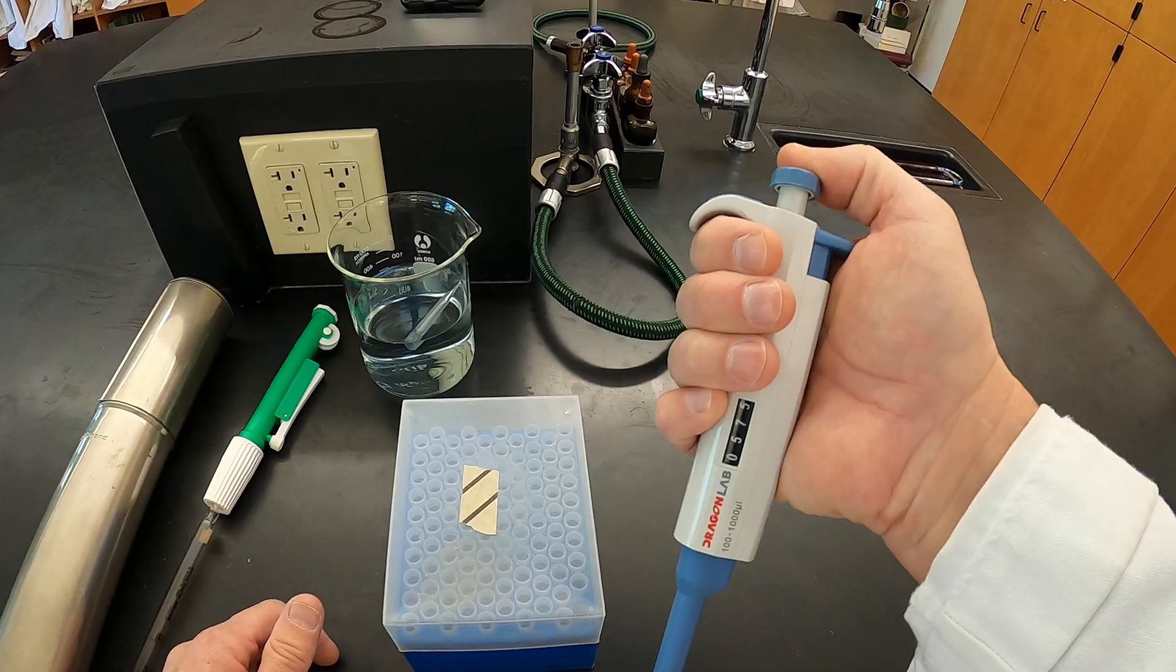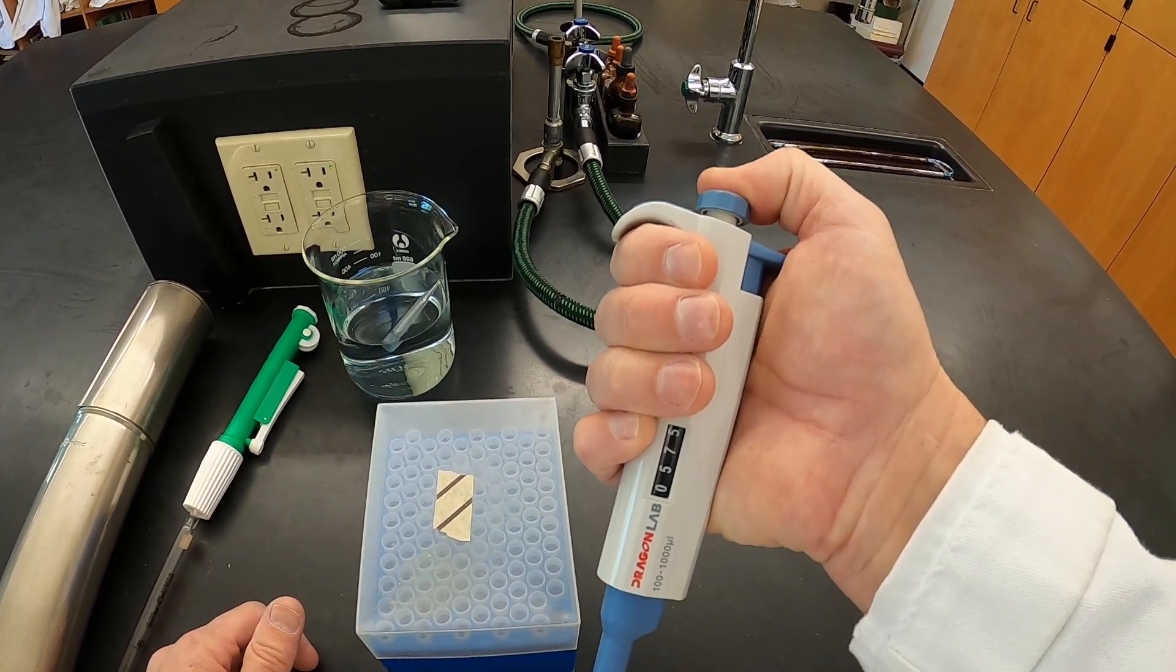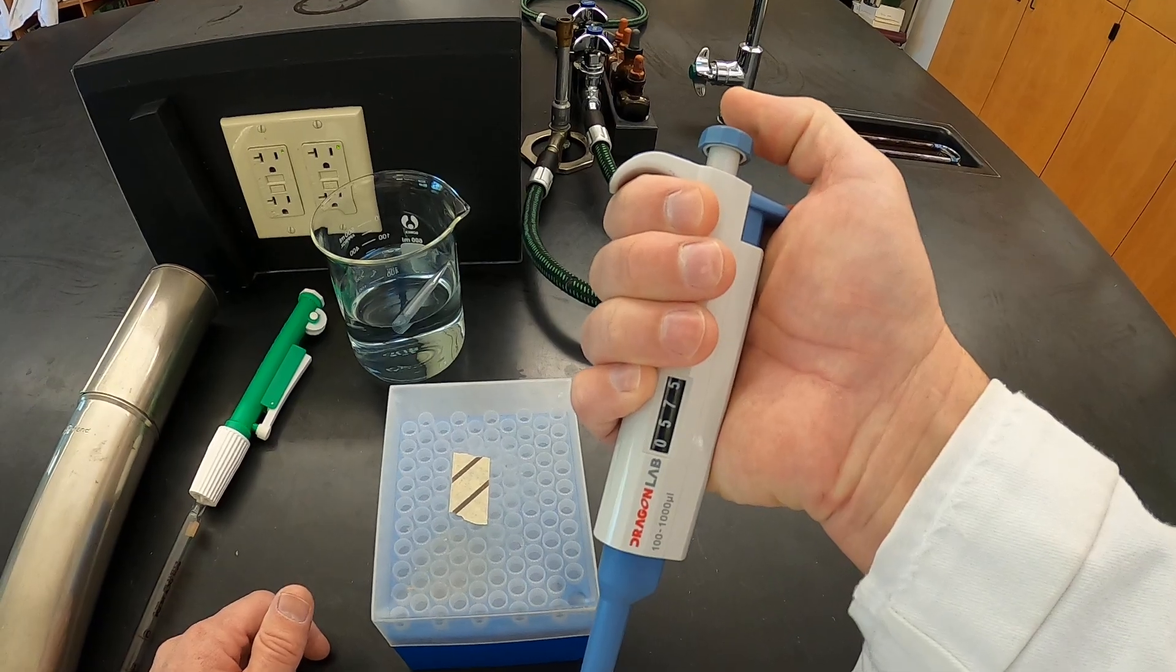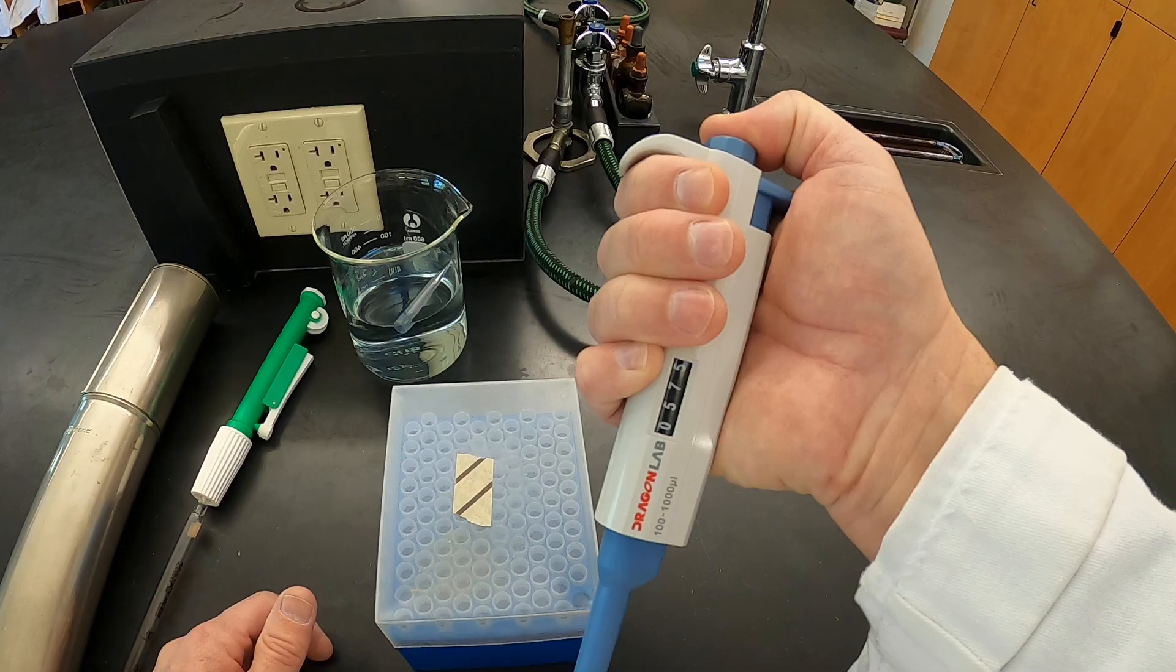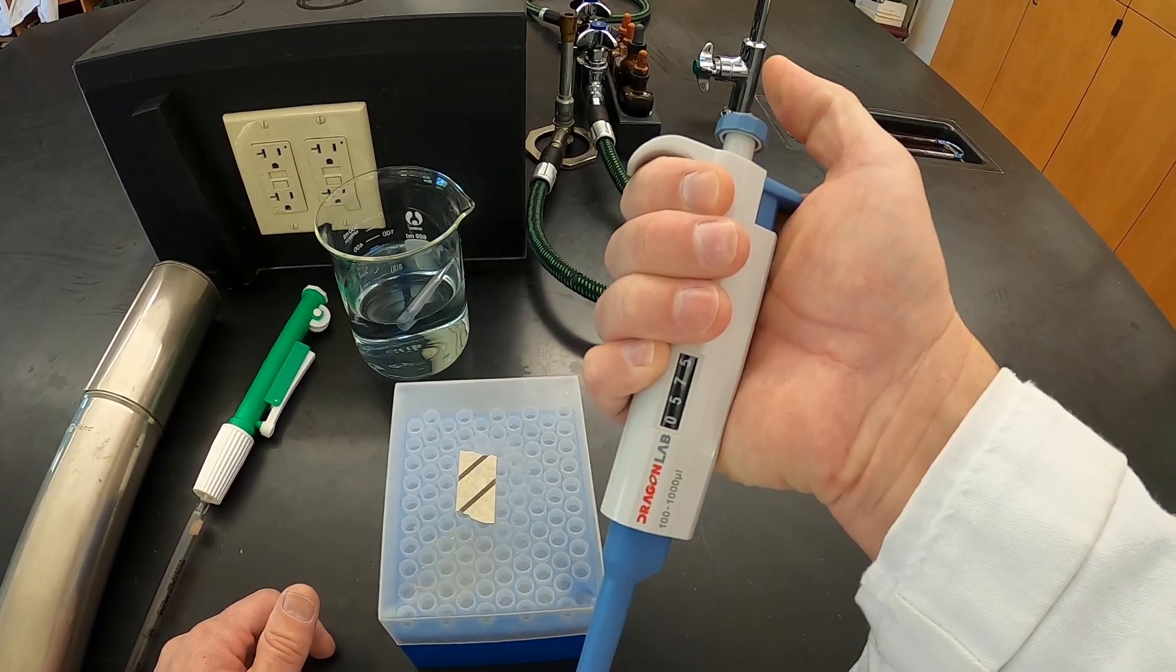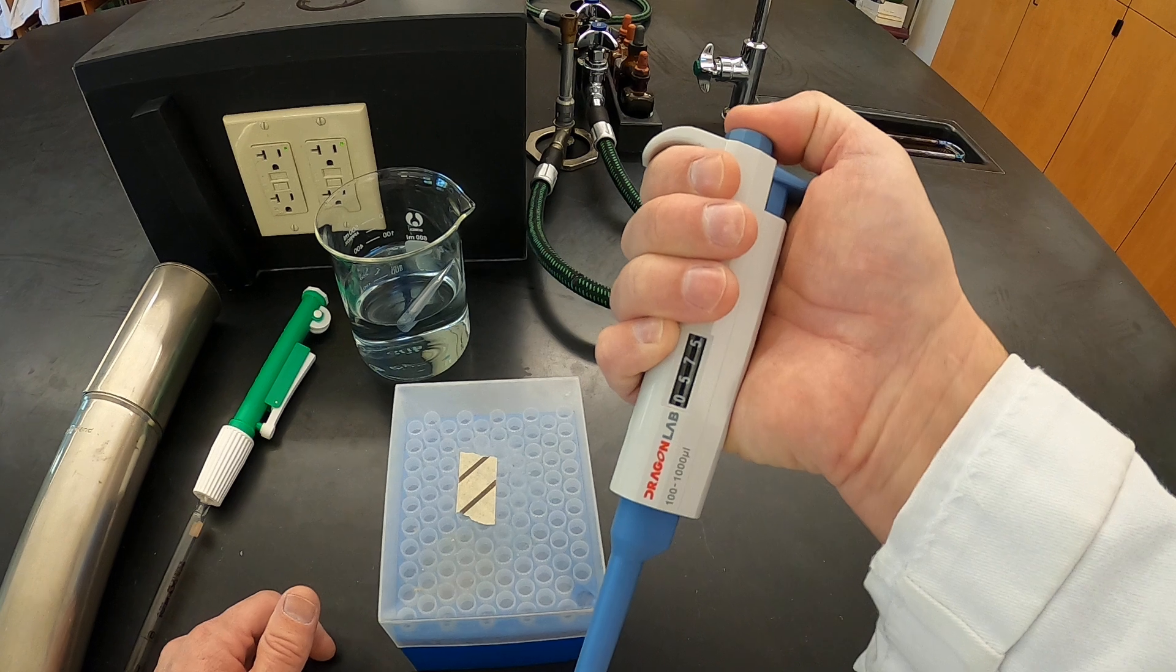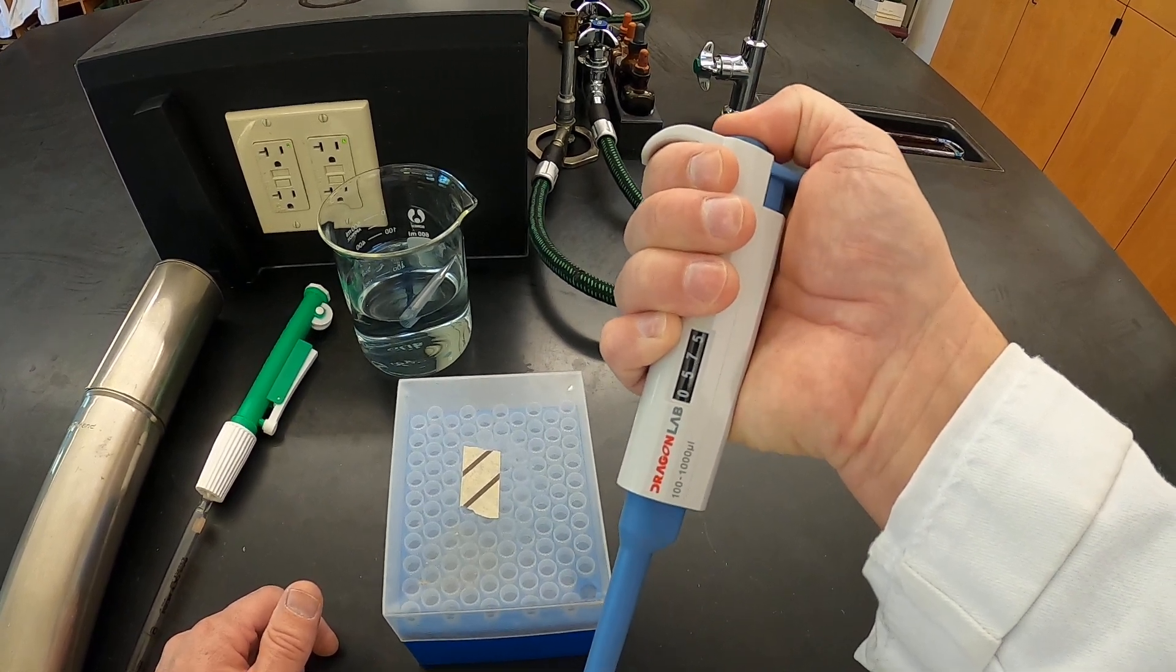You'll notice on the plunger that the plunger actually has two stops. So we can go down one stop, and then if I press a little bit harder, I can press down to a second stop. If we press down to the first stop and then the second stop. Because we're going to go down to the first stop to be able to withdraw our liquid, and then we're going to go down to the first stop and the second stop to eject our liquid.